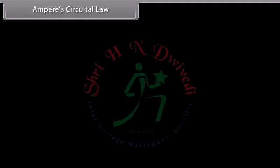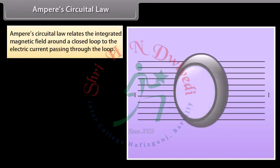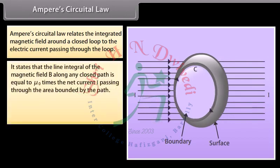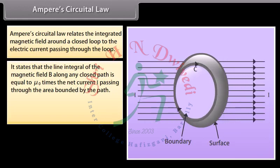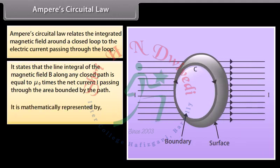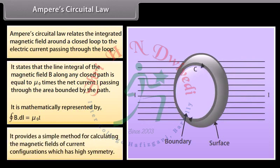Ampere's Circuital Law relates the integrated magnetic field around a closed loop to the electric current passing through the loop. It states that the line integral of the magnetic field B along any closed path is equal to mu-0 times the net current I passing through the area bounded by the path. It is mathematically represented as the closed integral of B dot dL equals mu-0 I. It provides a simple method for calculating the magnetic fields of current configurations which have high symmetry.